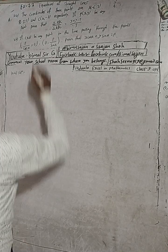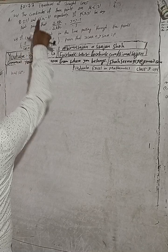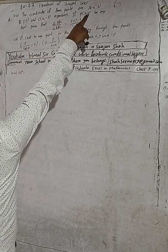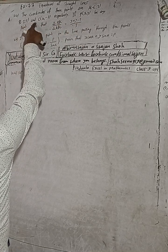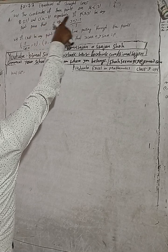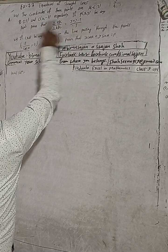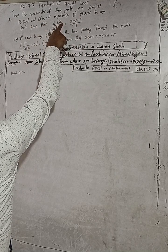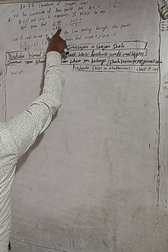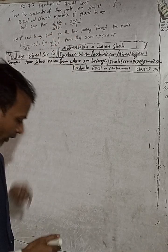Hi Class 9 and 10 students, welcome back to Vimal Sarji YouTube channel. This is question number 10A, exercise 7.7 - equations of straight lines, Class 9 optional mathematics. The question is: the coordinates of three points are A(-6, 3), B(-3, 5) and C(4, -3) respectively. If P(x, y) is any point, prove that area of triangle PBC divided by area of triangle ABC is equal to the given expression.